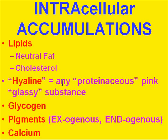Any proteinaceous accumulation within a cell or tissue can probably be called hyaline. Don't ever get confused when you hear the term hyaline, because the differential diagnosis of hyaline is everything — it could be necrosis, fibrin, amyloid, and a whole bunch of other things. Any abnormal protein that accumulates histologically can be called hyaline. Glycogen can accumulate as well, normally in areas that store glycogen, like liver and muscle.